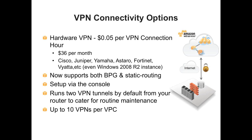You don't have to use a hardware VPN. You can also decide to VPN into the system. You can set up a public subnet for that, or set up a soft VPN within the VPC. Just like in EC2 Classic, you can install any type of software that can run on an x86 architecture within that VPC, and that software can also be VPN software.